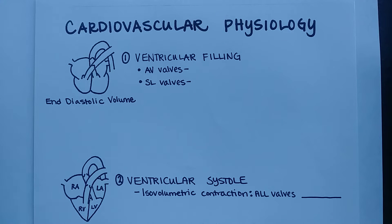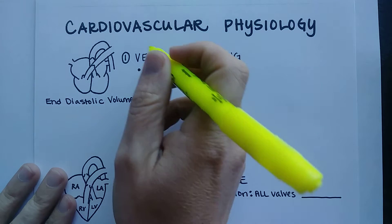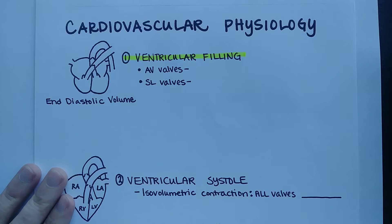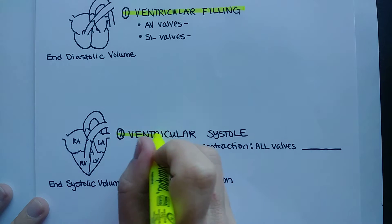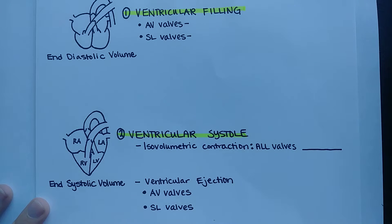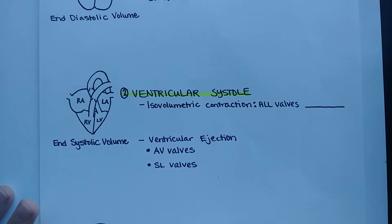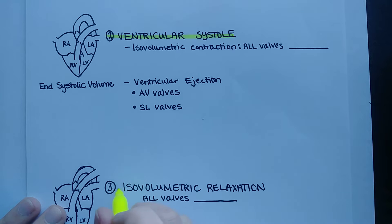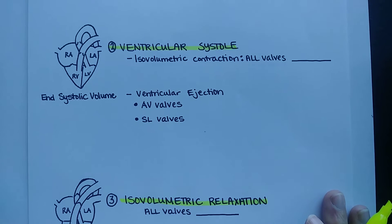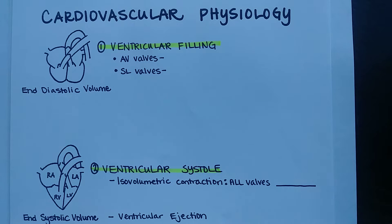Welcome to this video on cardiovascular physiology. To understand some of the terminology, I'll introduce you first to the cardiac cycle. This cycle starts with ventricular filling, when blood fills up the ventricles. The next phase is called ventricular systole — the word systole means contraction. The third phase is when the heart begins to relax but is not yet ready to be filled again. So the three phases are: ventricular filling, ventricular systole, and isovolumetric relaxation.